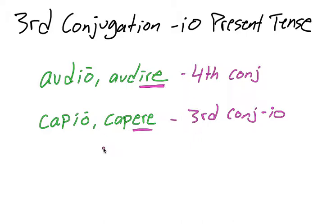Just because a verb ends in i-o doesn't mean it's going to be fourth, it could be third. Think of third conjugation i-o verbs as kind of like hybrid verbs. They look like fourth conjugation, but they are actually third, and they have traits that are both fourth and third conjugation.